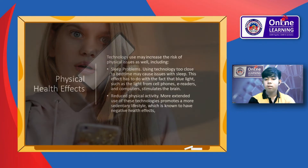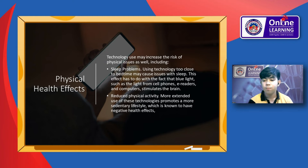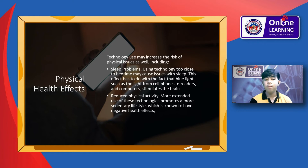Next is sleep problems. Using technology too close to bedtime may cause issues with sleep. This effect has to do with blue light — such as the light from cell phones, e-readers, and computers — which stimulates the brain. A 2014 study found that this blue light is enough to disturb the body's natural circadian rhythm, making it harder to fall asleep or causing a person to feel less alert the next day. To avoid the potential impact of blue light, people can stop using electronic devices or limit blue light in the hour or two before bedtime, and instead wind down with gentle activities such as reading a book or doing gentle stretches.